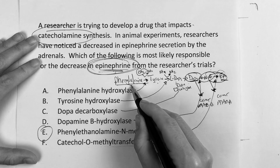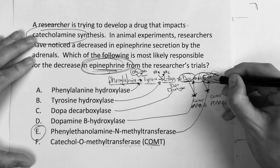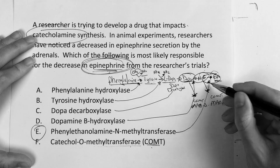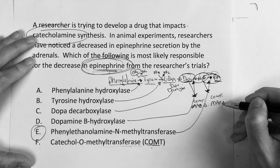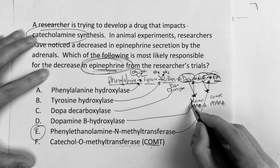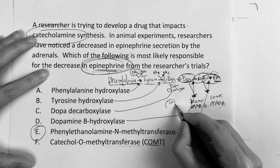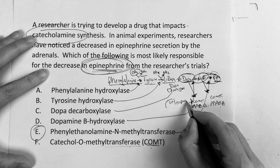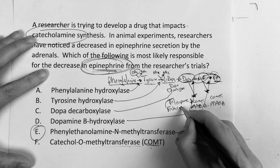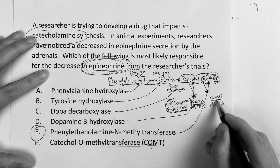Once you understand the basics of it, you can start adding in these extra details. Dopamine and norepinephrine are broken down by COMT and MAO-B, while norepinephrine is broken down by COMT and MAO-A. And you can start adding in that COMT inhibitors include tolcapone and entacapone. So what do they do? They're going to increase dopamine and potentially increase norepinephrine.